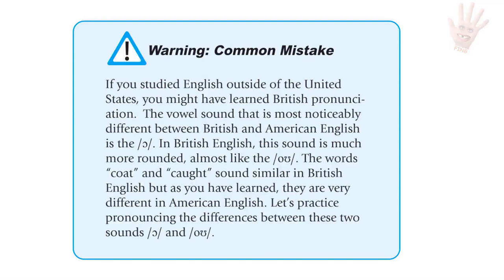Warning — common mistake: If you studied English outside of the United States, you might have learned British pronunciation. The vowel sound most noticeably different between British and American English is the Aw. In British English, this sound is much more rounded, almost like the Oh. The words 'coat' and 'caught' sound similar in British English, but as you have learned, they're very different in American English.